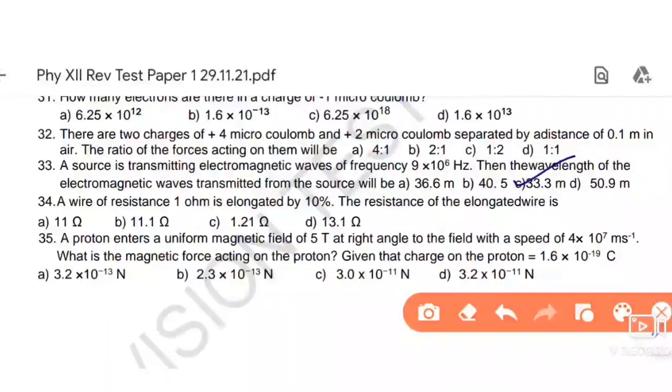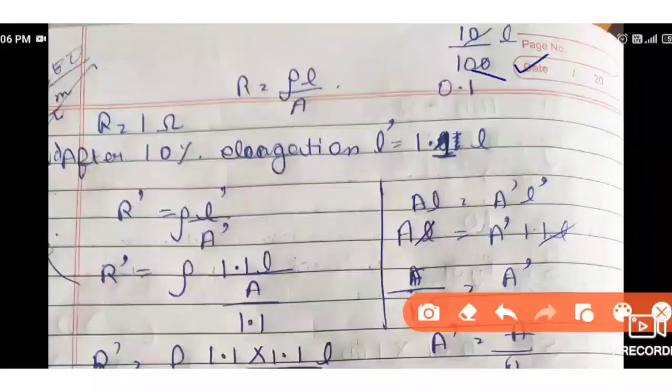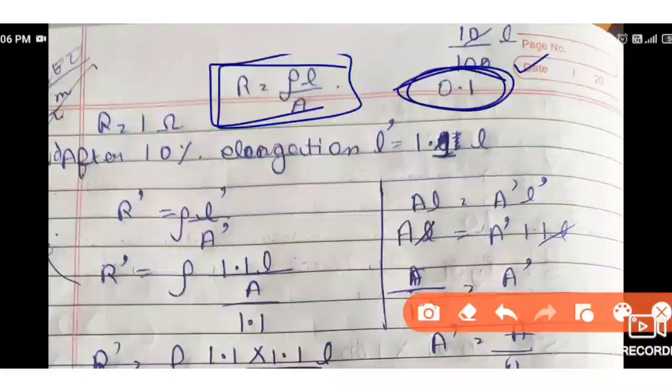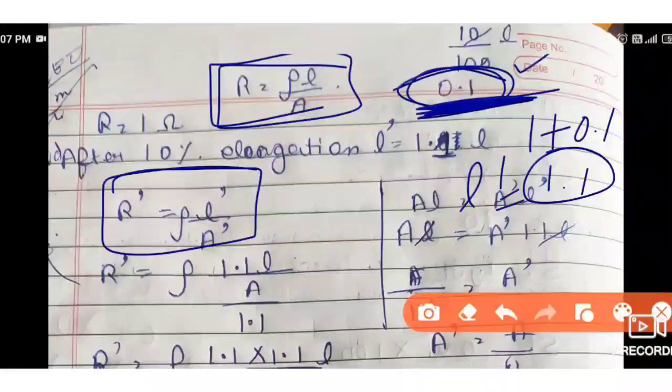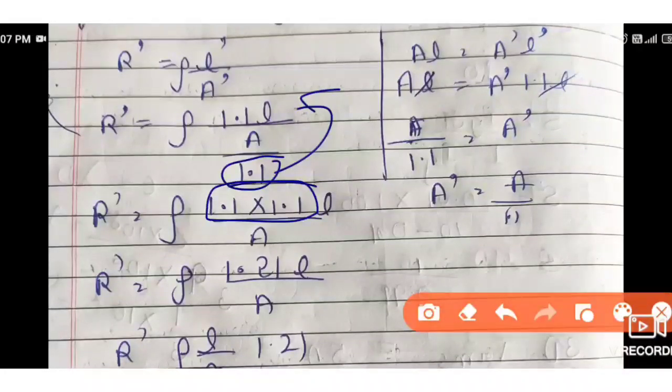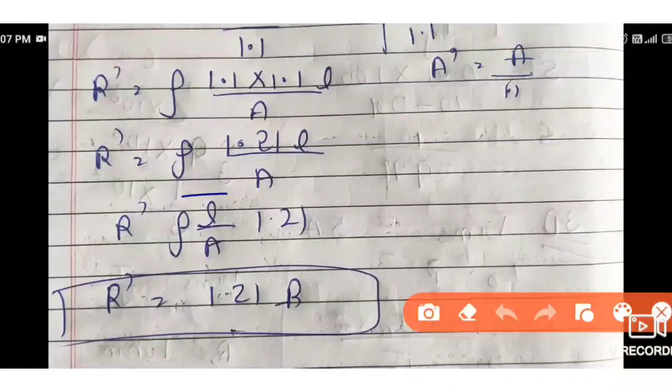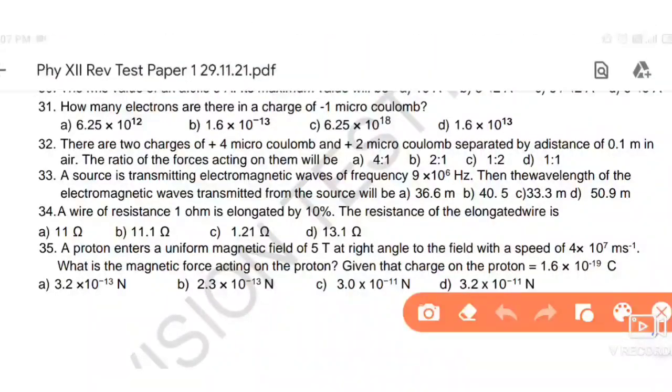Next, a wire of resistance 1 ohm is elongated by 10 percent. We need to find resistance. 10 percent means 10 over 100 L, which is 0.1. R value is rho L over A. R dash value is rho L dash over A dash. Length increased by 0.1, so 1 plus 0.1 equals 1.1. L dash is 1.1 L. Area will decrease accordingly. When we multiply 1.1 by 1.1, we get 1.21. 1.21 times rho L over A equals 1.21 R is the final answer. Option number C is the right answer.